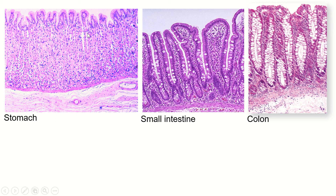Remember that the stomach has those little gastric pits and then all of these gastric glands. So: stomach has glands all the way down to the muscularis mucosa; small intestine has the muscularis mucosa right below the crypts; and the large intestine has far more goblet cells, no openings or very small openings toward the lumen, and again the muscularis mucosa right below the glands.